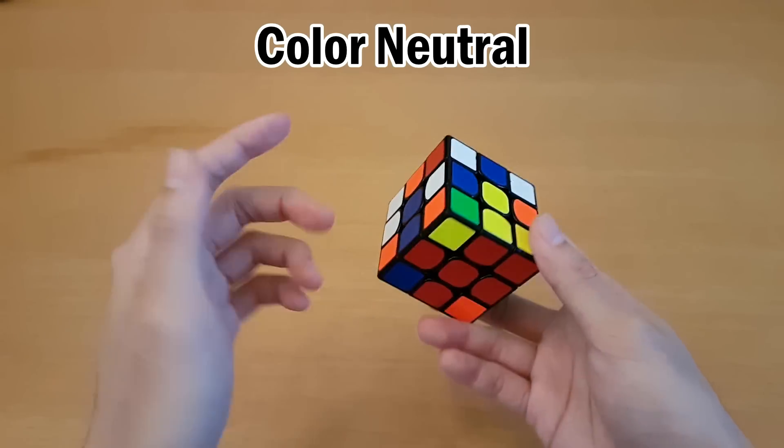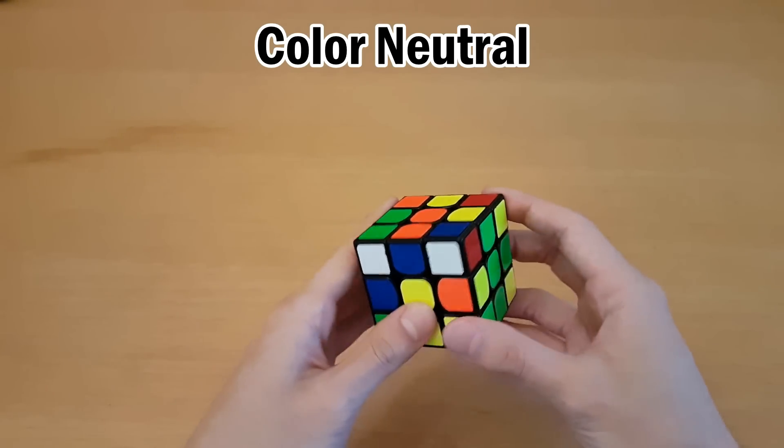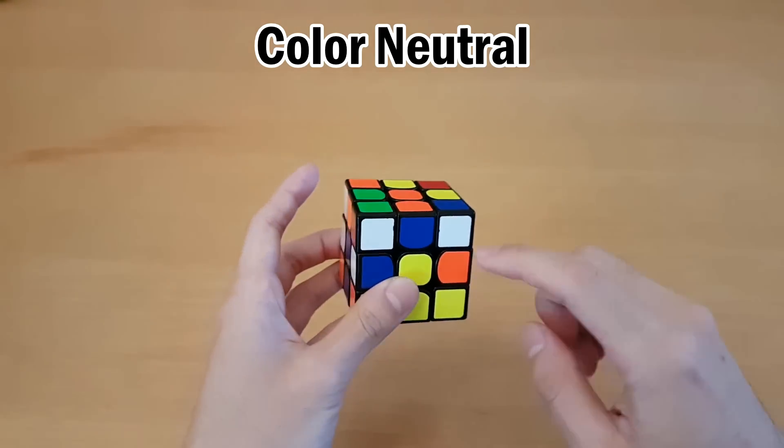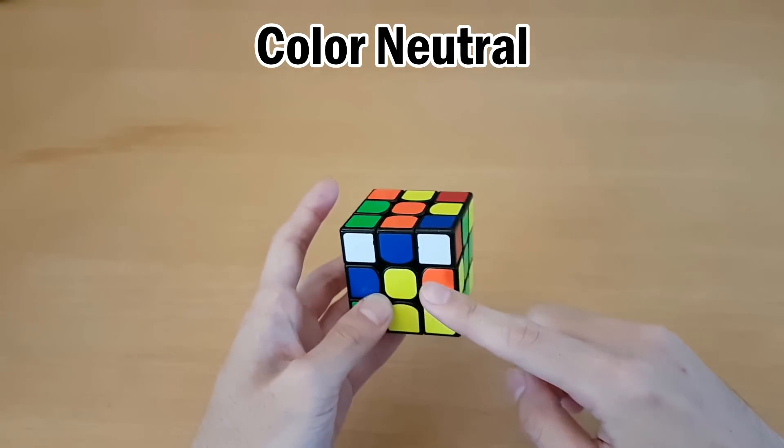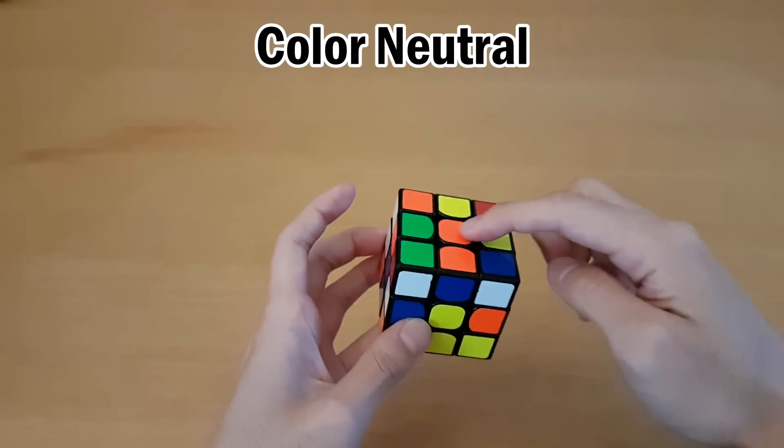So being color neutral has the advantage of being able to start on any cross, but it's hard to learn because you have to learn all the new color patterns. So if you're used to white and you start doing a solve like this, then your brain will probably be filtering out yellow and trying to look for white, which is not very useful because white and yellow are not special in this case. Red and orange are the special colors.